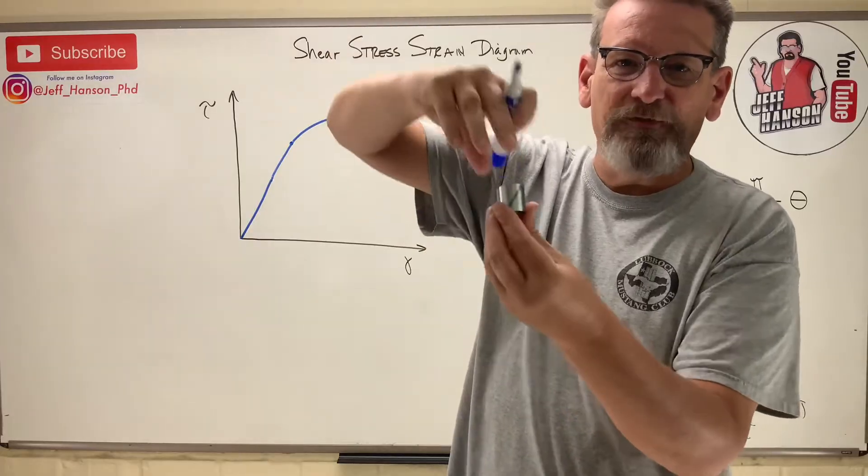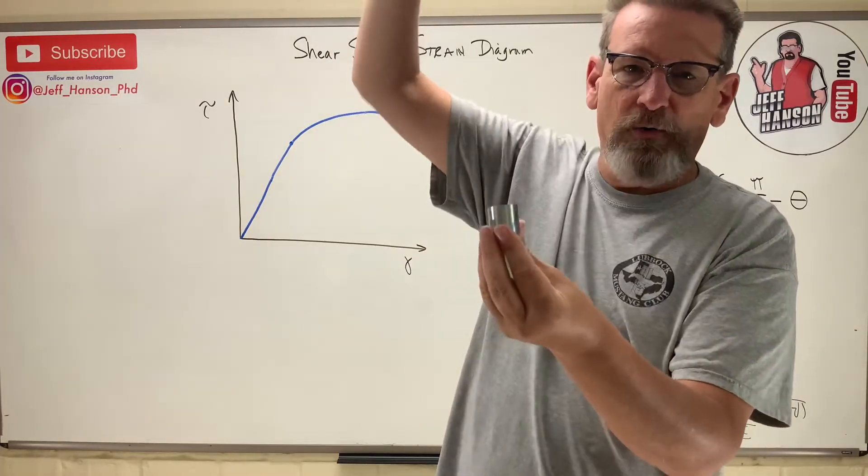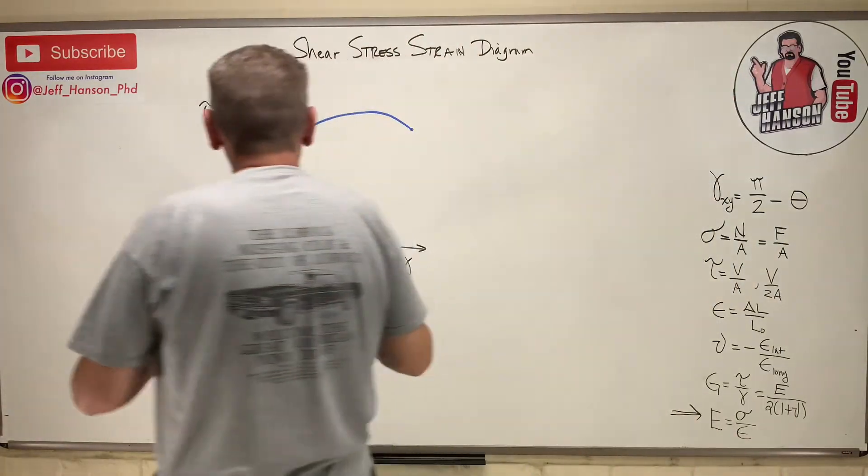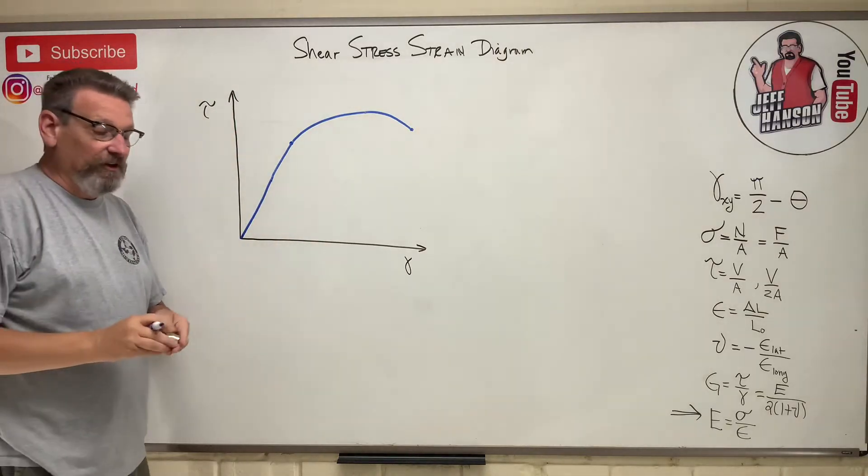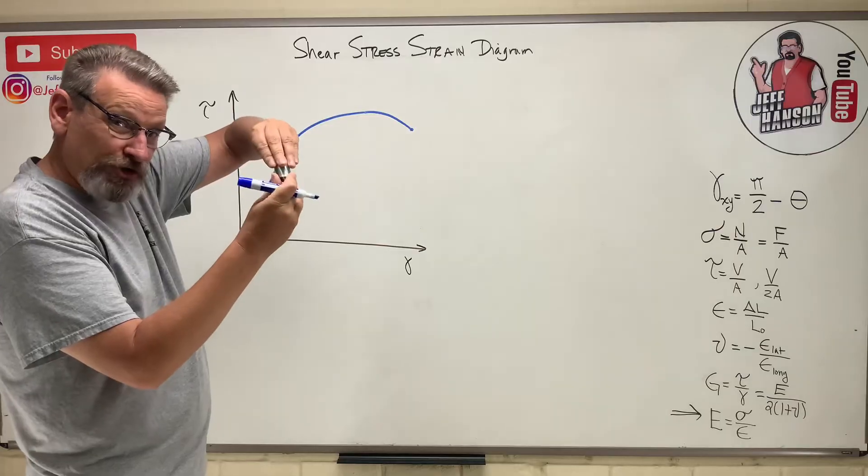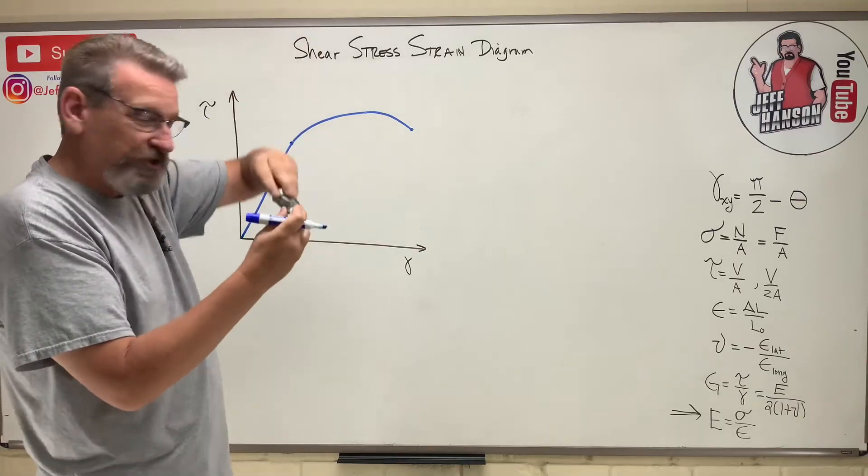That one line that used to be straight is now not straight. And as I twist that, as I let it go, it bounces back. So that is this elastic part of the curve.